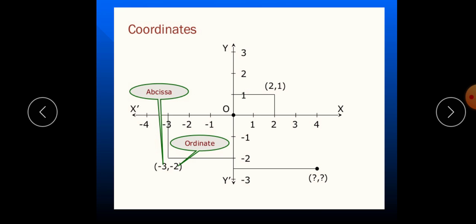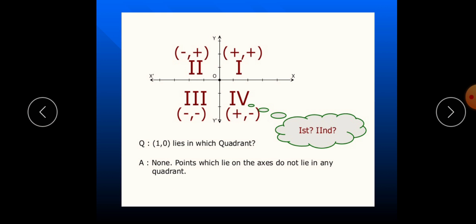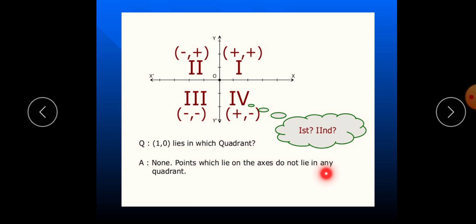As we know, quadrant 1 is (+,+), quadrant 2 is (-,+), quadrant 3 is (-,-), and quadrant 4 is (+,-). The x-value is called the abscissa and the y-value is called the ordinate. Now, can you say where 1 comma 0 lies? It does not lie in any quadrant because y is 0 — points which lie on the x-axis do not lie in any quadrant. This you should remember.